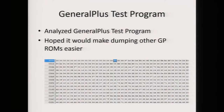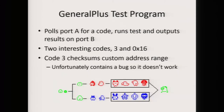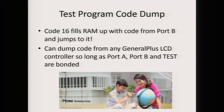The next thing I did was analyze the General Plus test program. This is on every single General Plus LCD controller, so I thought it would be useful for dumping older Tamagotchis and generally useful for everything that runs General Plus. Basically, you start up with the test pin pulled, it pulls port A for a code, and then puts output on port B. The most interesting code was code 16, which would take code off of port B, fill up RAM with it, and jump to it. This basically means there's now a method to dump code from any General Plus LCD controller — the caveat being that port A, port B, and test have to be bonded, so on some chips you might actually have to remove the epoxy.